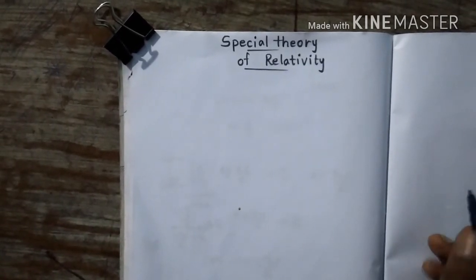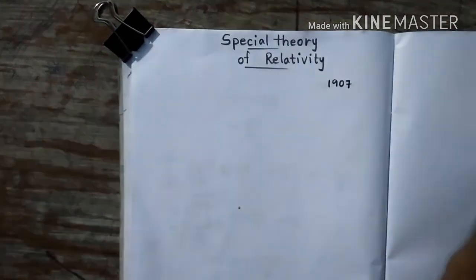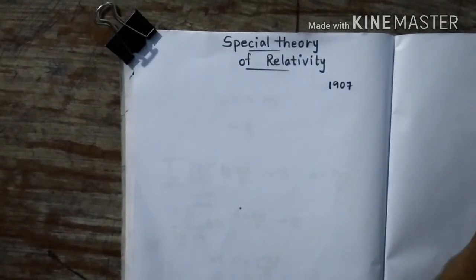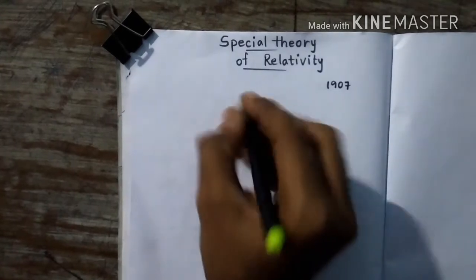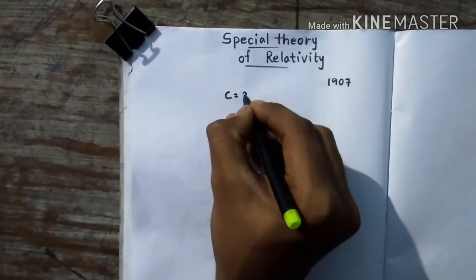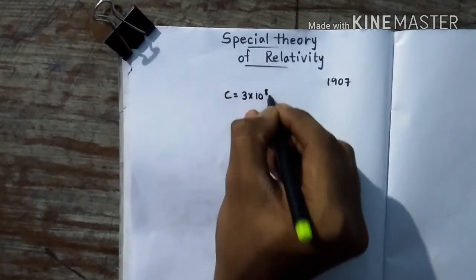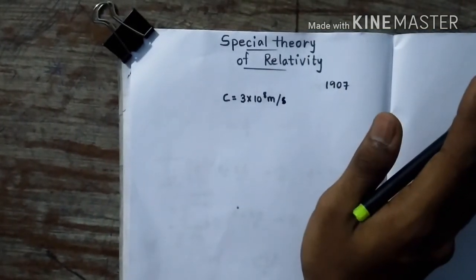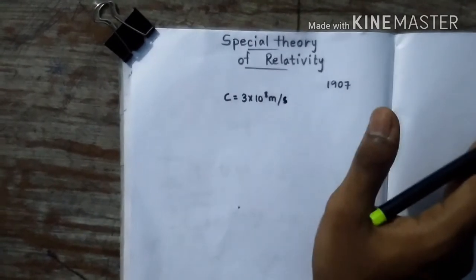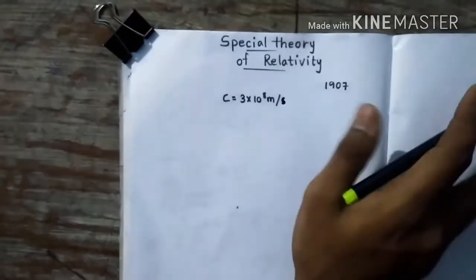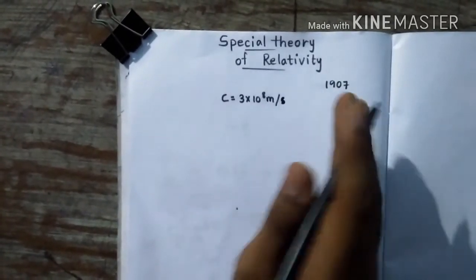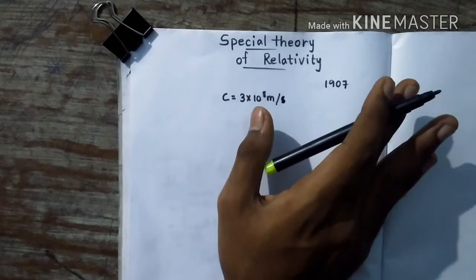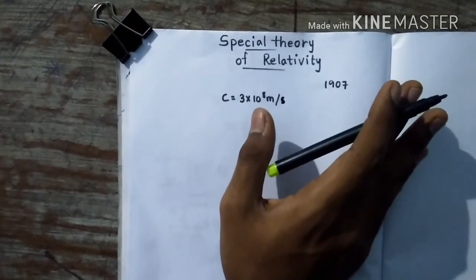This theory was proposed by Albert Einstein in 1907. He published it in a paper in Germany, which became very popular. It basically deals with the simple idea that the speed of light is constant, represented by 'c', approximately equal to 3 × 10⁸ meters per second. Speed of light is always constant no matter what you are moving with respect to — whether you are stationary or moving with some velocity. No object in this universe can move faster than the speed of light, as it would require an infinite amount of energy to do so.